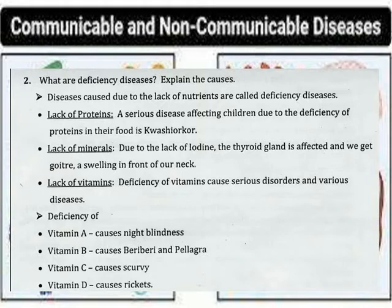Diseases caused due to lack of nutrients are called deficiency diseases. Lack of proteins causes a serious disease affecting children. Lack of minerals: due to lack of iodine, the thyroid gland is affected and we get goiter, a swelling in front of the neck.